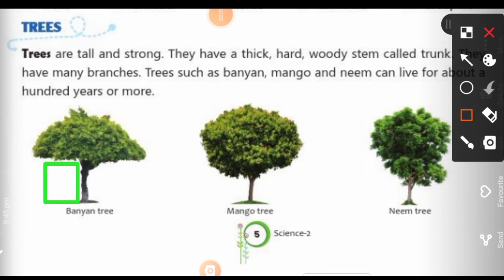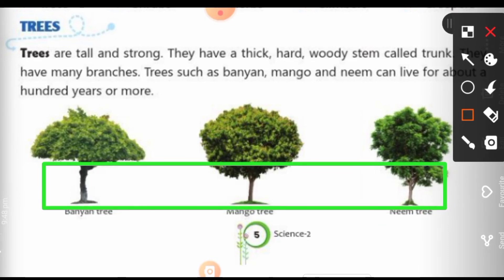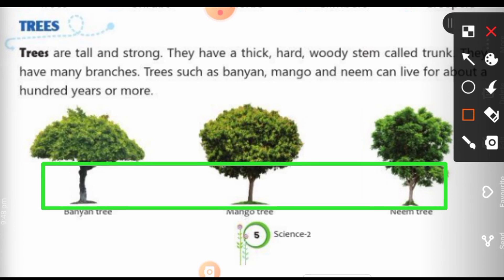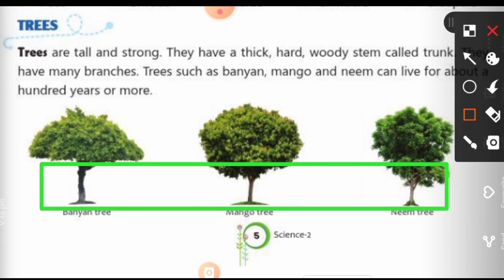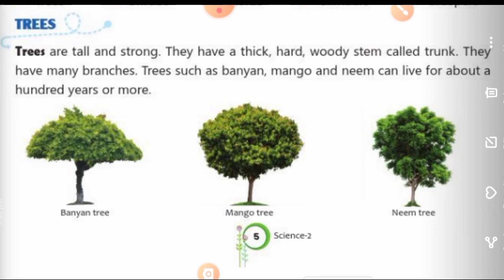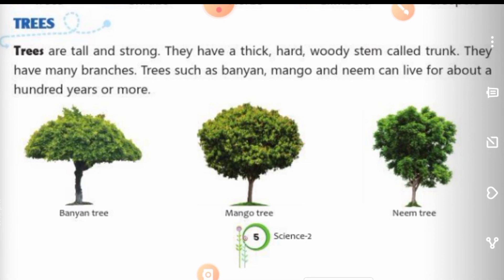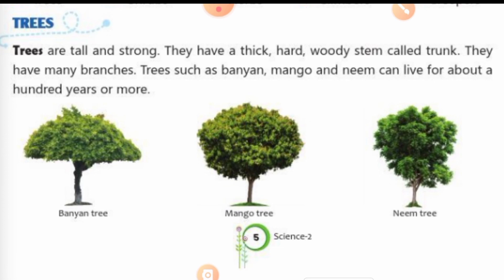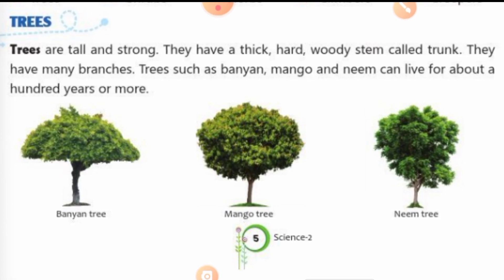You can see here the stem of the tree. In stem ko hem loog trunk boletay hai — jou bade-bade trees hootay hai, unke stem ko hem loog trunk boletay hai. They have many branches. Trees ke paas bhoat sari branches hootay hai. Trees such as banyan, mango and neem can live for about a hundred years or more. Kuch trees jiasse ke banyan, mango and neem, sot sal ya usse bhi zyada dhinho tuk zindha rehatta hai.